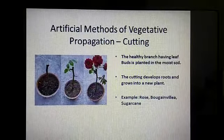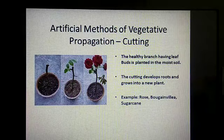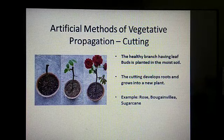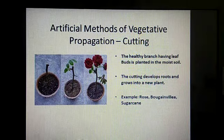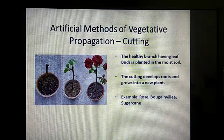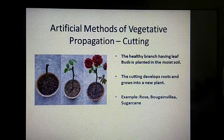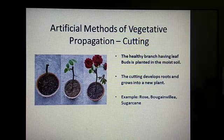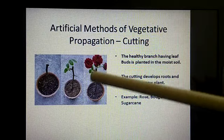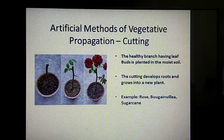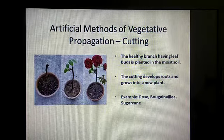So till now what we saw are the natural ways. Now we are going to see some artificial methods. The first one is cutting. I normally do this at my home — I have some rose plants. I cut the stem about six to eight inches, remove the leaves, and then plant it in the soil. After a few days, if it gets a proper amount of water and fertilizers, it develops into a new plant and you can see some beautiful rose flowers. This is very easy — you can also try it at home with the help of your parents.